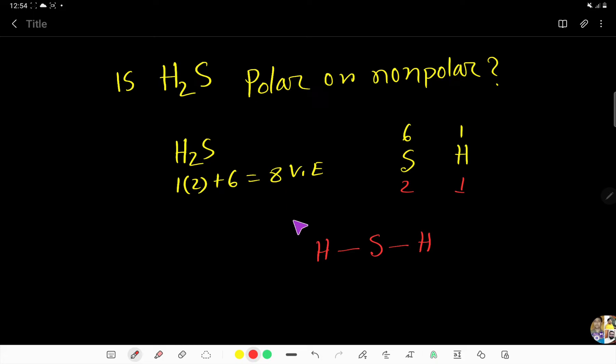So, here we have 8 valence electrons, but here we have used 2, 4. Next, 4 electrons will come over sulfur. So, this is the Lewis structure of sulfur.